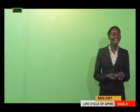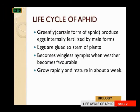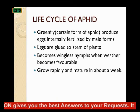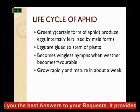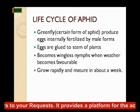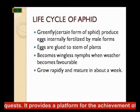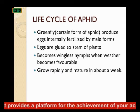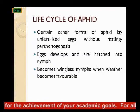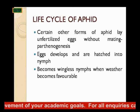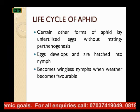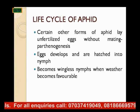Regarding the life cycle of aphids: green flies, a certain form of aphid, produce eggs fertilized by their male forms. The eggs are glued to the stem of the plant and become wingless nymphs when weather becomes favorable, growing rapidly and maturing in about one week. Certain other forms of aphid lay unfertilized eggs without mating — a process called parthenogenesis.